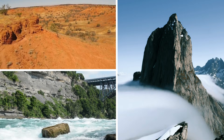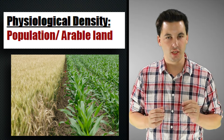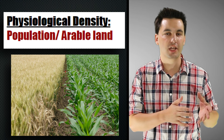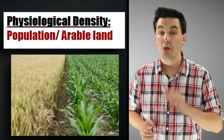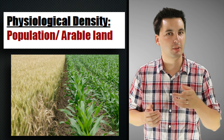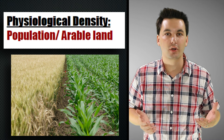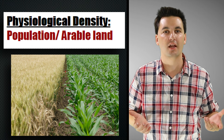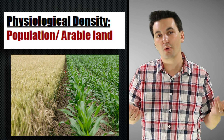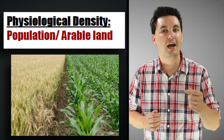The next density is physiological density, and this one's really important because it gives us more insight into society. To find it, take the total population and divide it by the total amount of arable land — land that can produce food. This density shows how much stress we're putting on each unit of land. A higher number means we need to get more food out of just one section of land, risking depletion of soil nutrients and desertification, which could force us to rely on trade. A lower number means less stress on the land and better protection of natural resources.